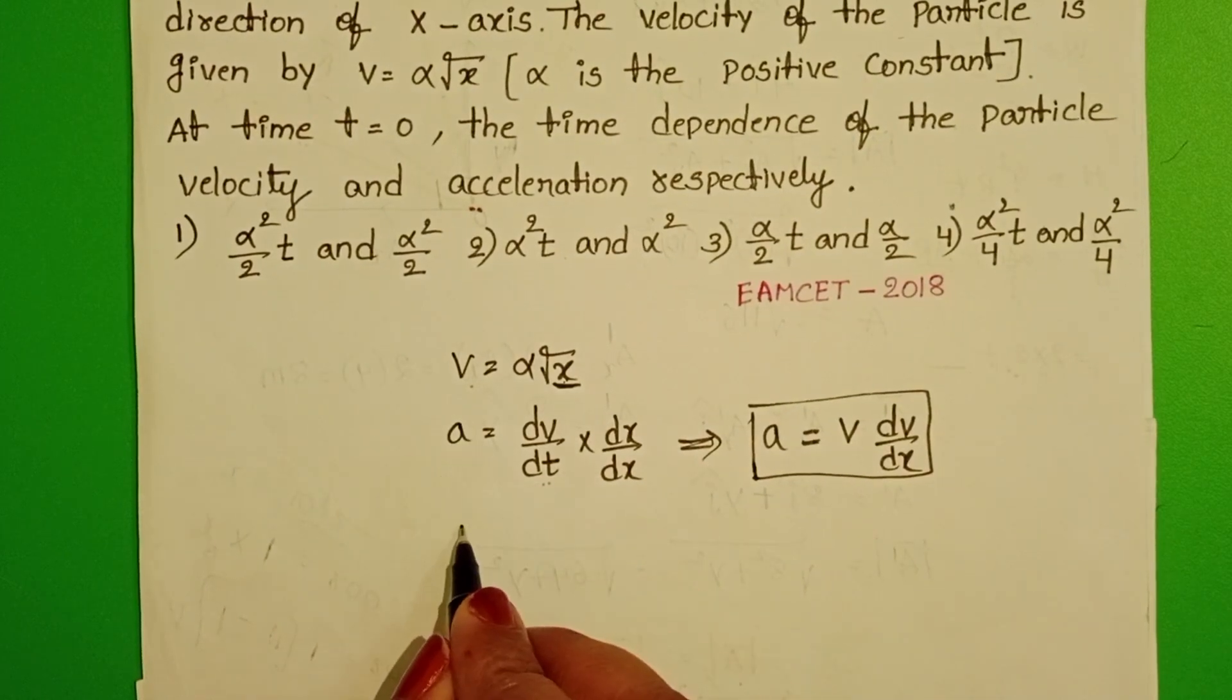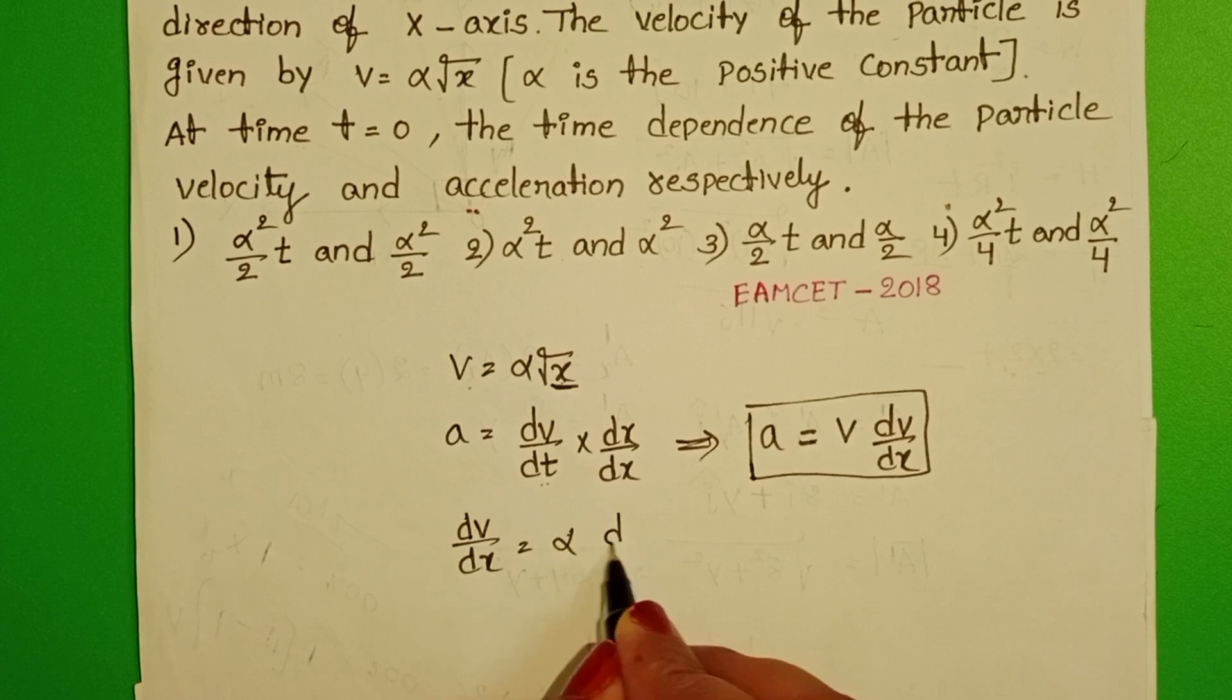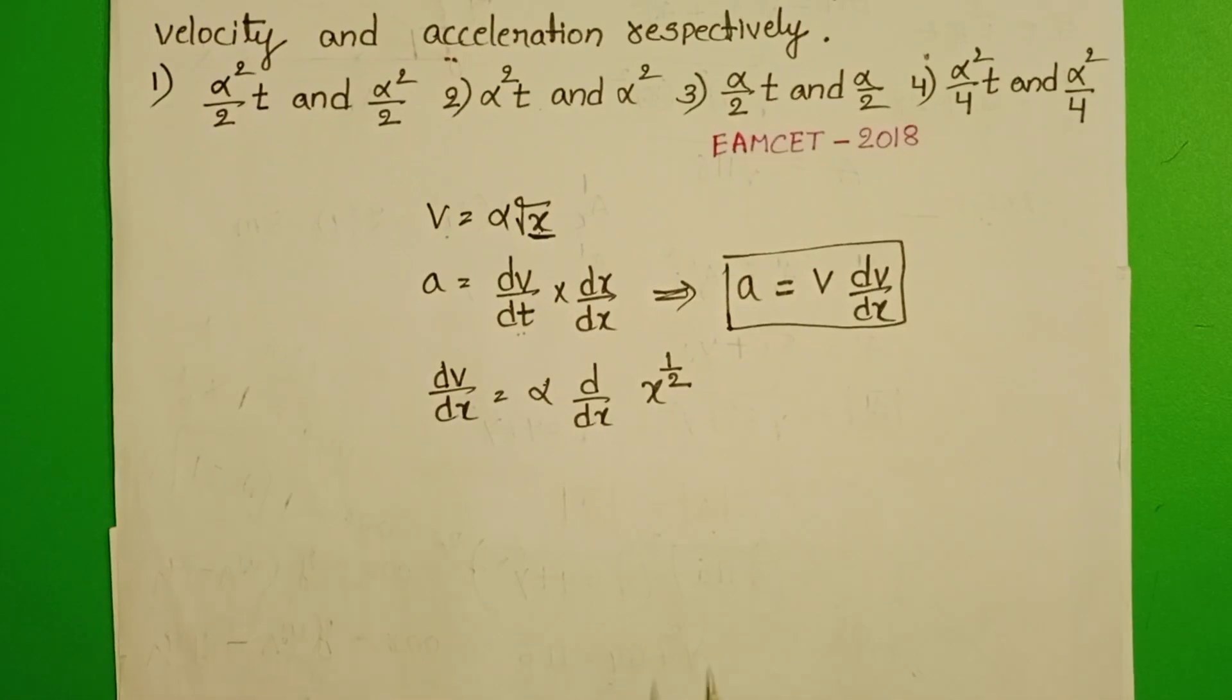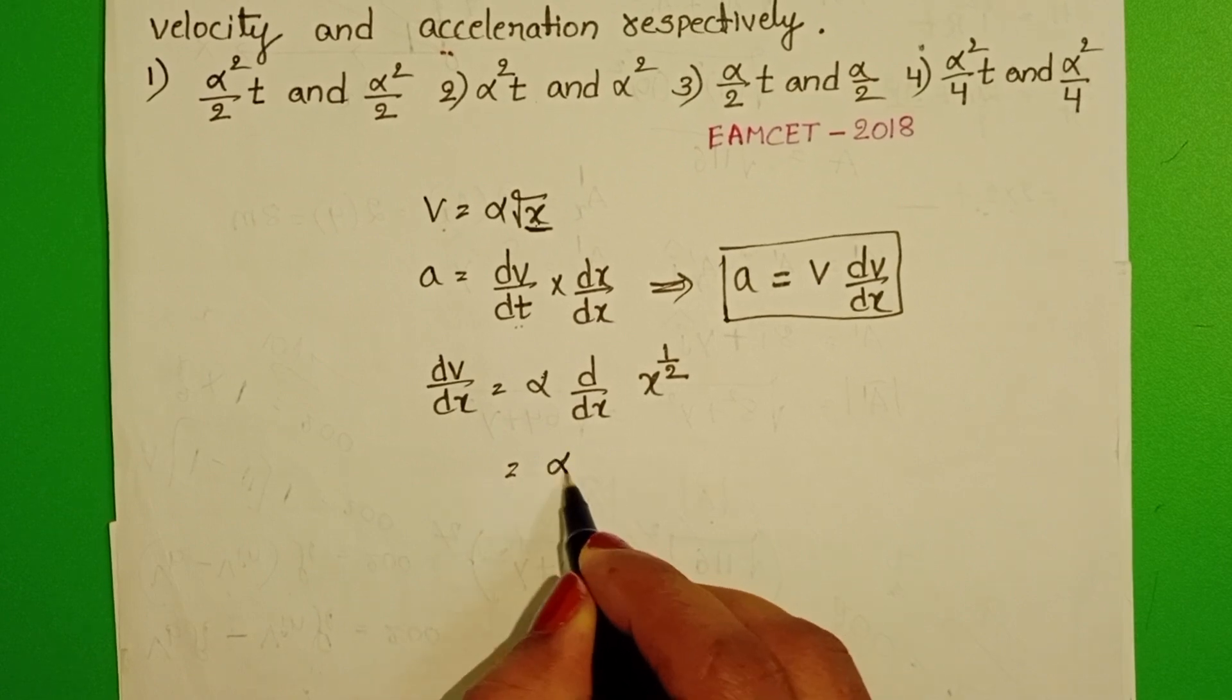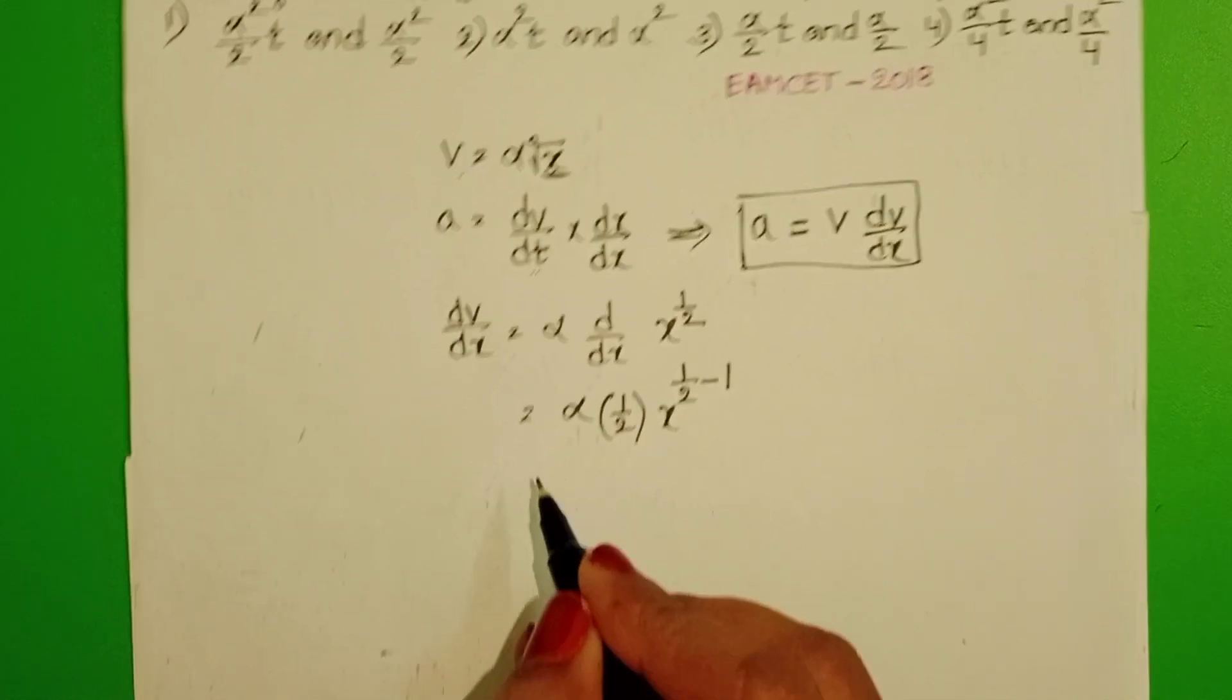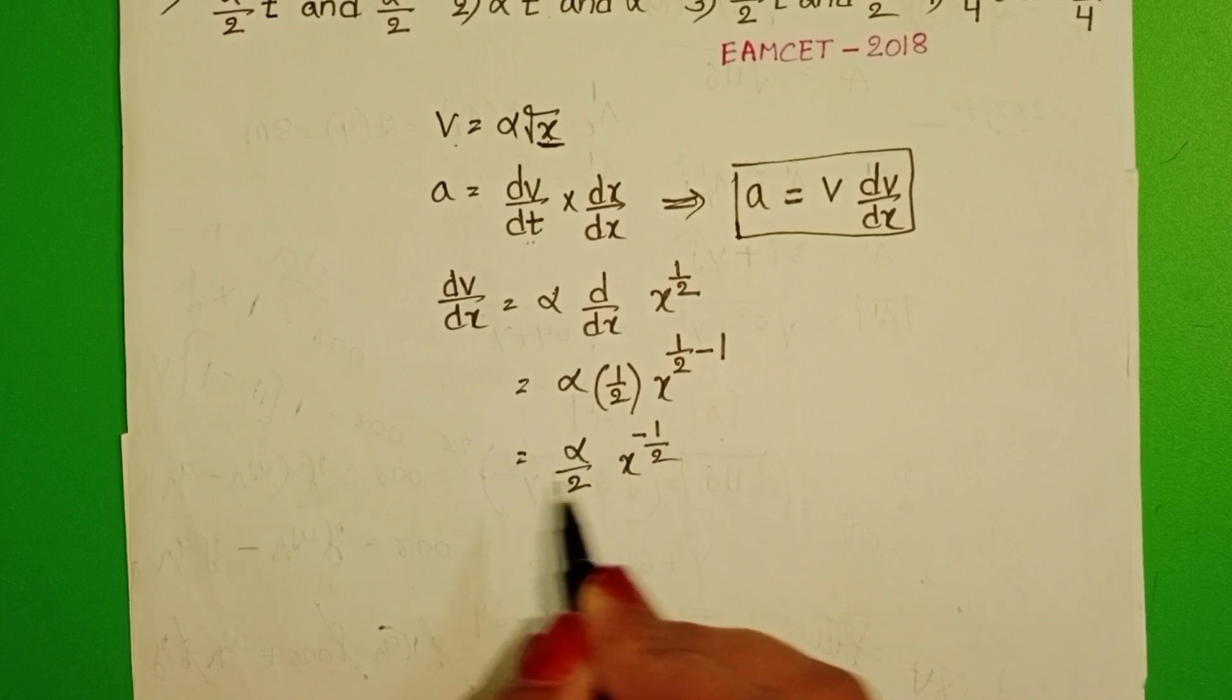Differentiate velocity with respect to position. dv by dx equals alpha constant d by dx of x power 1/2. We know d by dx of x power n equals n into x power n minus 1. Half into x power 1/2 minus 1. Alpha by 2 into x power minus 1/2.